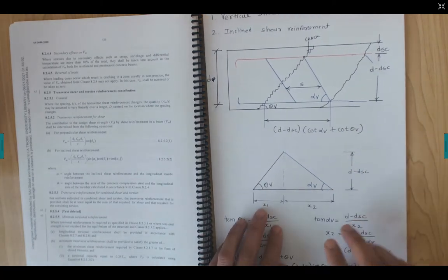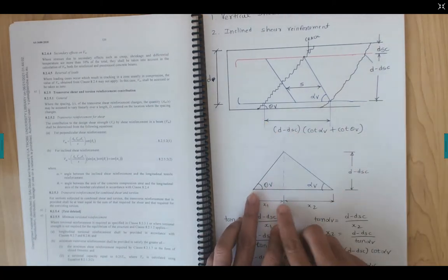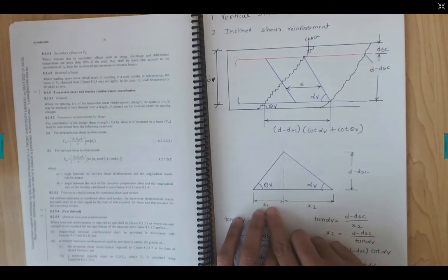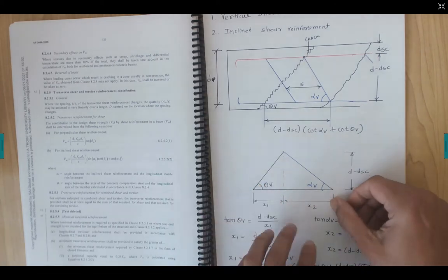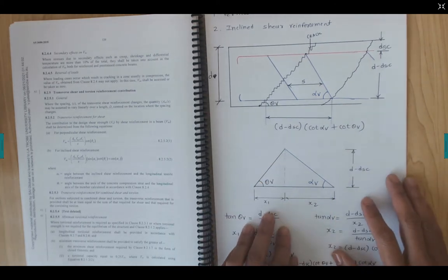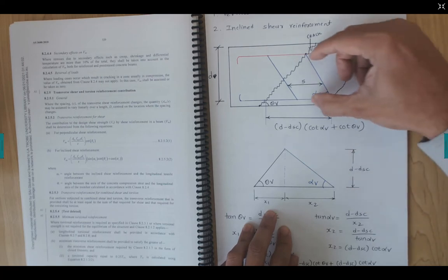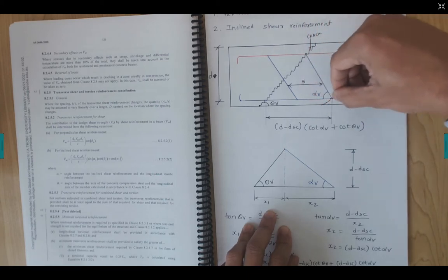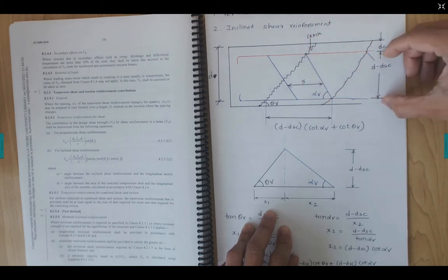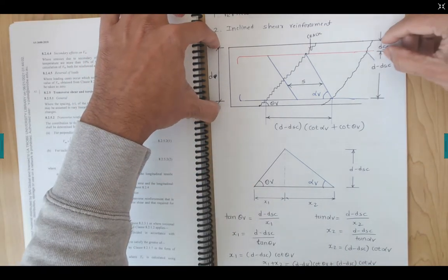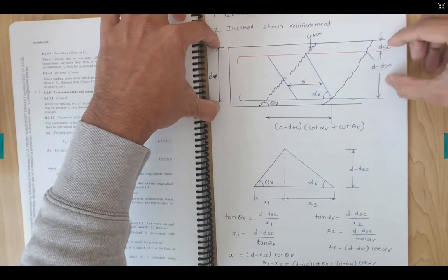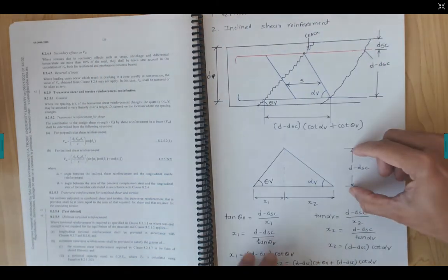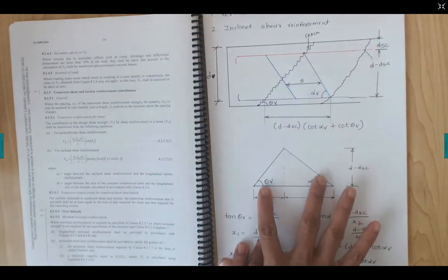I label the horizontal distance on the left side as x1 and on the right side as x2 — just for the mathematics. The vertical height of the triangle is d minus dsc, which is the distance from the compression reinforcement to the tensile reinforcement. So d minus dsc gives us this vertical dimension, and I draw these triangles for simplicity.